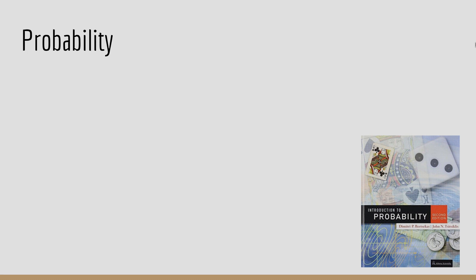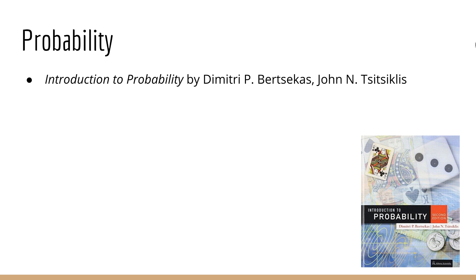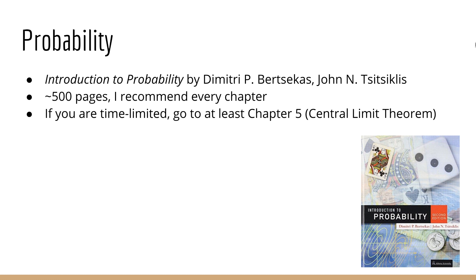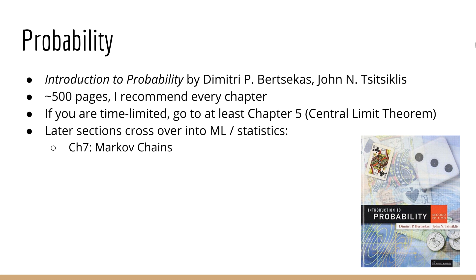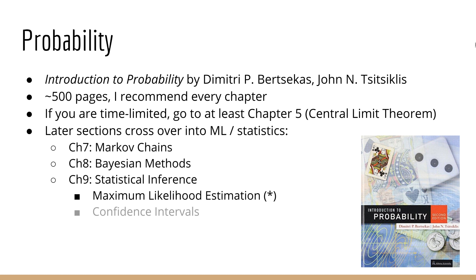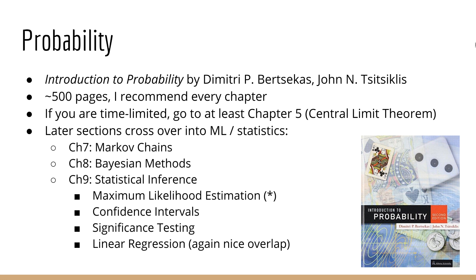For probability, I recommend the book titled Introduction to Probability. This is another book where I would pretty much recommend going through every chapter — it's about 500 pages long. If you're strapped for time, I recommend at least the first five chapters, which goes up to the central limit theorem. The later chapters cross over with machine learning and statistics. Chapter 7 is about Markov chains. Chapter 8 goes into Bayesian methods — not necessary, but extremely useful for any of my courses on Bayesian machine learning. Chapter 9 goes into statistical inference: maximum likelihood estimation, confidence intervals, significance testing, and even linear regression. Students have a lot of trouble with maximum likelihood, so this chapter is strongly recommended.